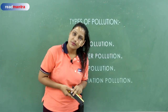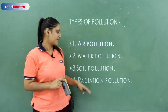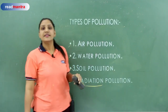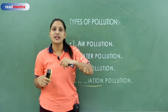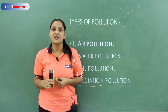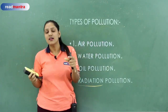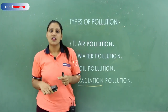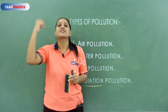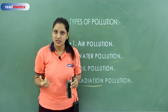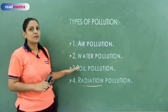Excessive use of pesticides and insecticides is also very harmful. Then the next form of pollution is radioactive pollution, also called radiation pollution. China is a developed country, and the waste from developed countries also causes pollution for us. So today we will look at four major pollutions: air pollution, water pollution, soil pollution, and radiation pollution.